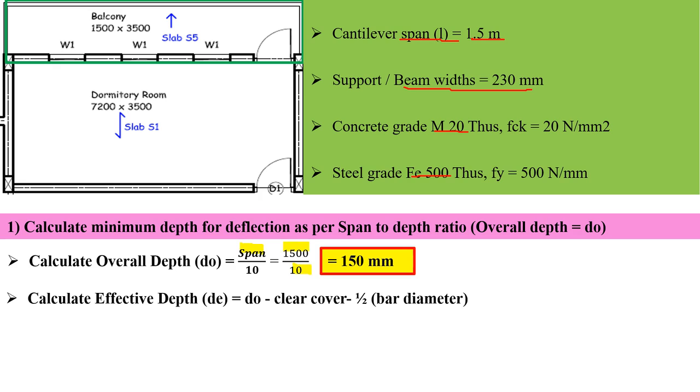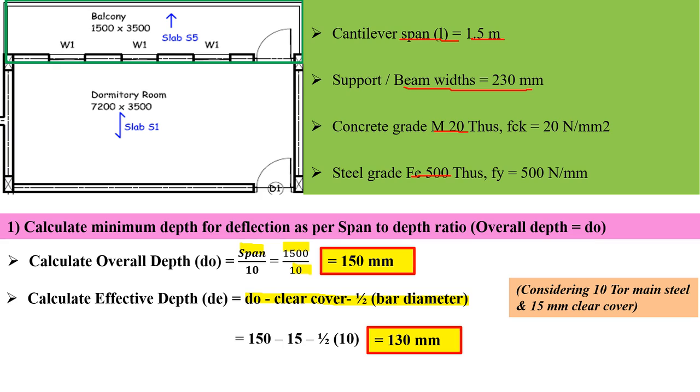Now effective depth equals overall depth minus clear cover minus half of the bar diameter. For this slab, we are taking the clear cover as 15 mm, which is the minimum clear cover for slabs as per IS codes, and bar diameter as 10 mm. Putting the value, I am getting 130 mm.